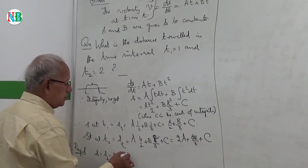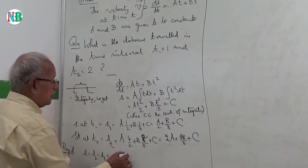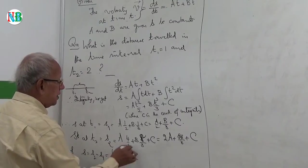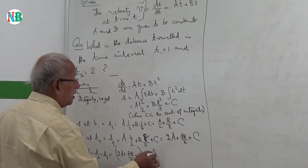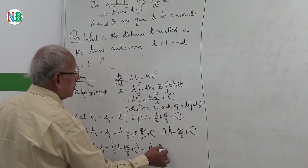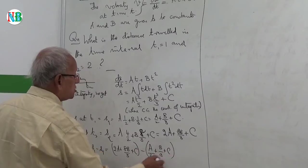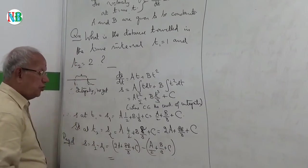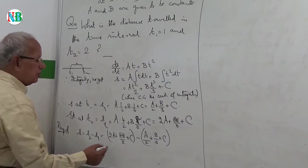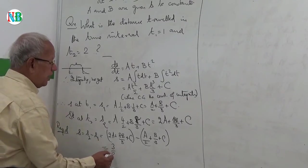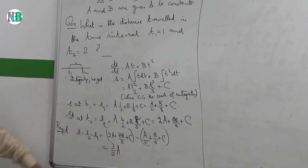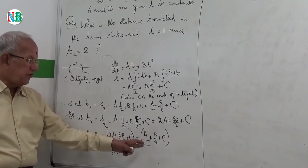So I just have to subtract. So from 2a plus 8b by 3 plus c, subtract a by 2 plus b by 3 plus c, the same constant integration. So 2a minus a by 2 is 3 by 2 times a. Is that right? 2a minus half, 2 minus half is 3 by 2. 2a minus half a, okay?